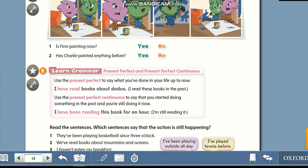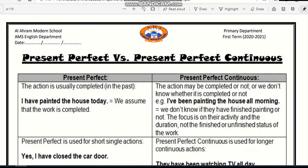For more explanation, we will go through that booklet. Here, as you can see, there is a schedule to compare between present perfect simple and present perfect continuous. First, present perfect simple: the action is usually completed in the past. For example, I have painted the house today. We assume that the work is completed.